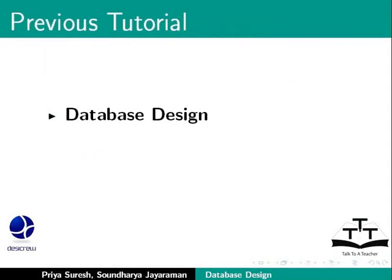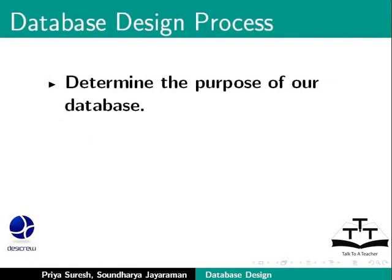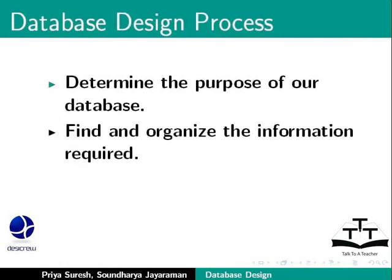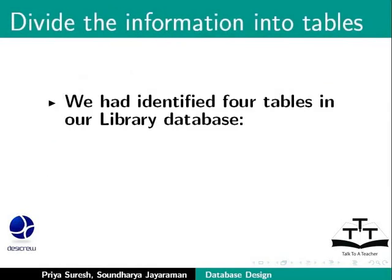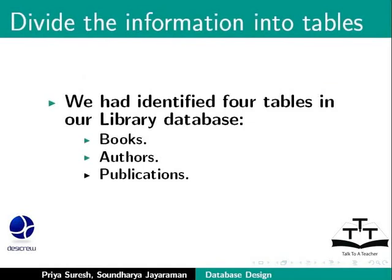In the last tutorial, we started the process of database design for a simple library application. We first determined the purpose of building the library database, then continued by finding and organizing the information about the library, and we divided the information into tables. We had identified four tables in our library database: Books, Authors, Publications, and Members.